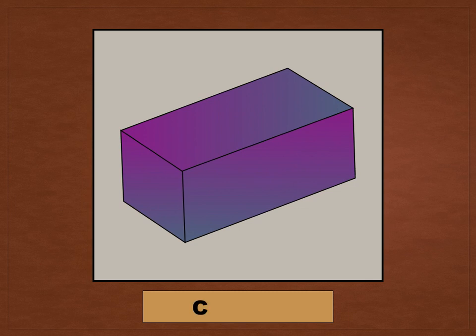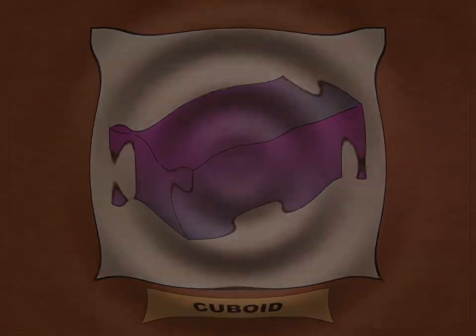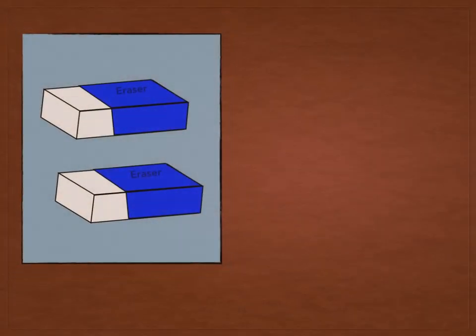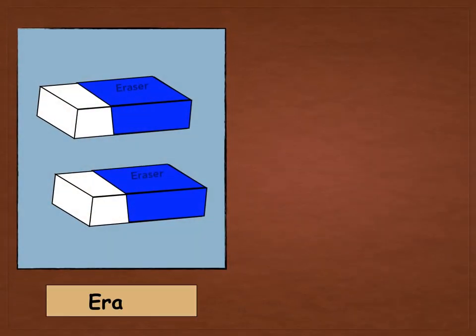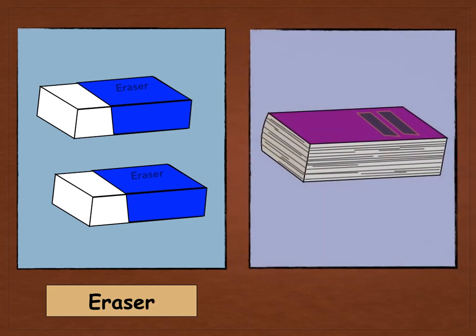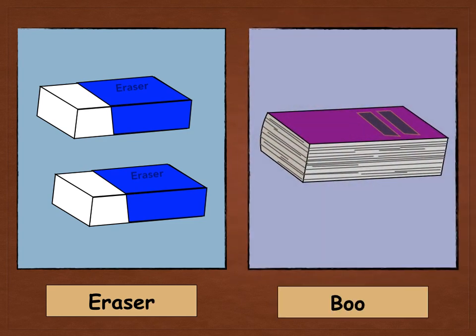No, it's a cuboid! Cuboid can also be called a rectangular prism! You can use it in an eraser! That's what you erase pencil marks with! Or sometimes you might read a book!